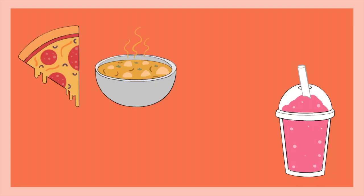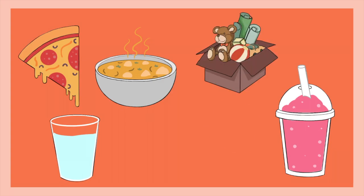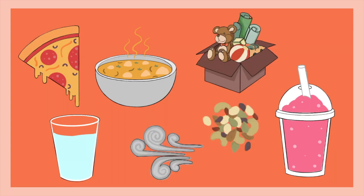Even though some of my favorite examples are of course smoothies, pizza, and chicken noodle soup, others include sugar water, a toy box, trail mix, and air.